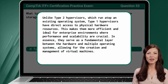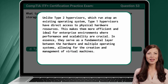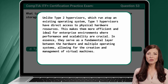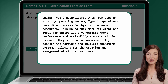Unlike type 2 hypervisors, which run atop an existing operating system, type 1 hypervisors have direct access to physical hardware resources. This makes them more efficient and ideal for enterprise environments where performance and scalability are crucial. In essence, they serve as a fundamental layer between the hardware and multiple operating systems, allowing for the creation and management of virtual machines.